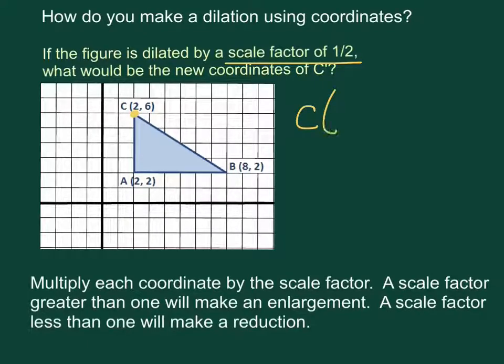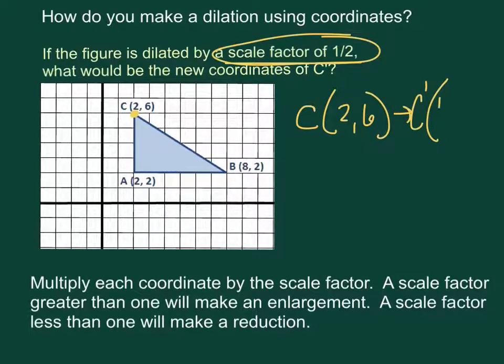So let's look at C, it was 2 comma 6, and we know we're going to use a scale factor of 1 half. So C prime is going to be 1 half times 2 and then 1 half times 6. So let's see what our C prime would be. C prime will end up being 1 comma 3.